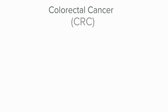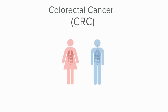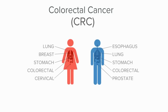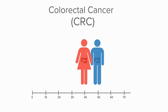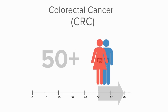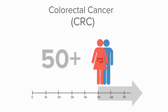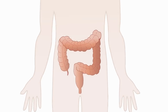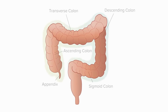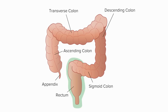Colorectal cancer, or CRC, is the fourth most common cancer in men and women, usually diagnosed in people aged 50 years or older. It occurs in the colon, which is the large intestine, and also occurs in the rectum, which is the connecting pathway between the colon and the anus.